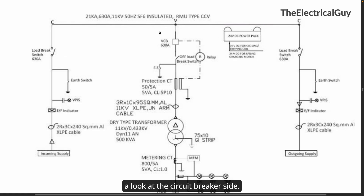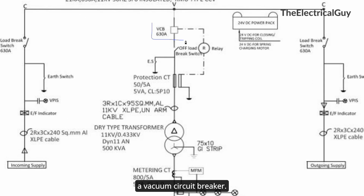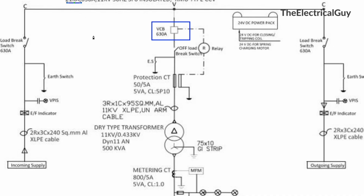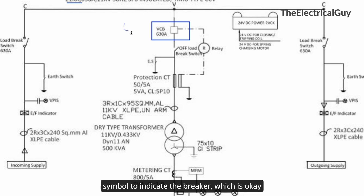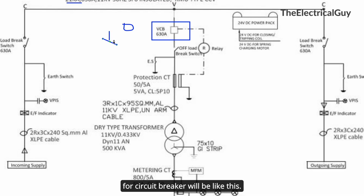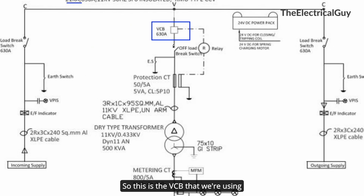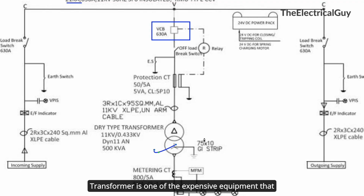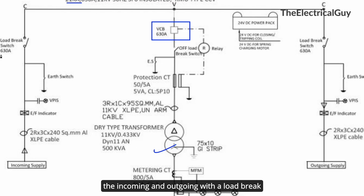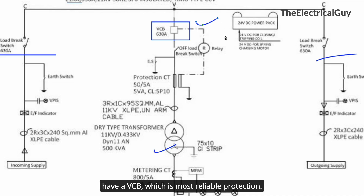Now let us look at the circuit breaker side. Here we have used a vacuum circuit breaker rated at 630 ampere, with a short time current rating of 21 kilo ampere. They have used a square as the symbol for the breaker, though generally a cross symbol is used for circuit breakers. This VCB is connected to the transformer, because the transformer is one of the most expensive pieces of equipment and needs proper protection — which is why a VCB is always preferred over a load brake switch for transformer protection.